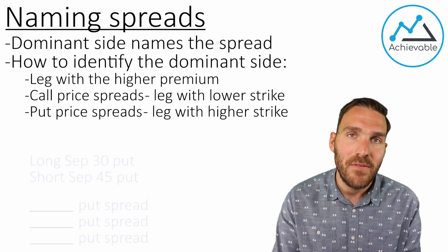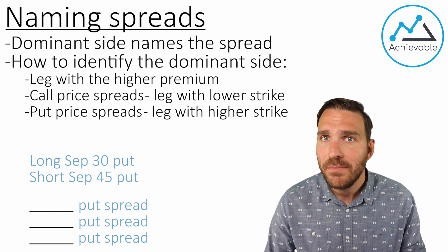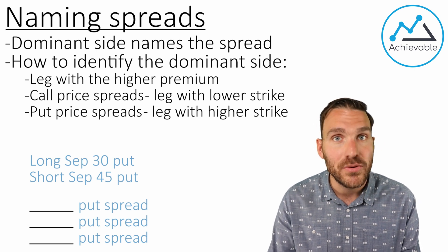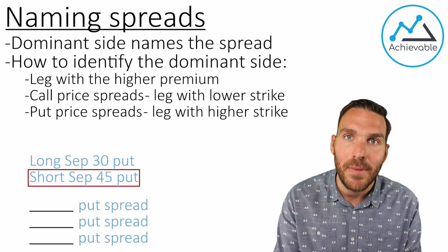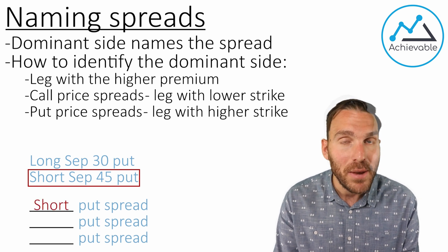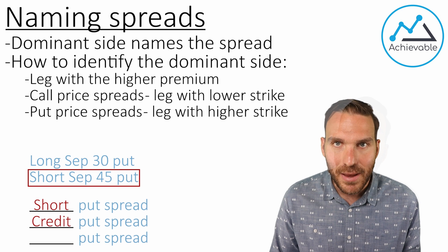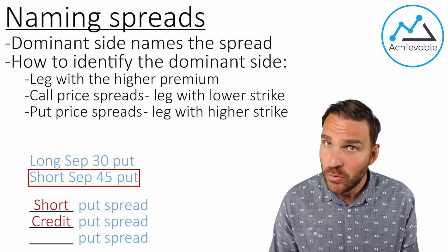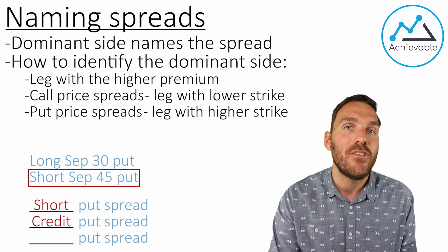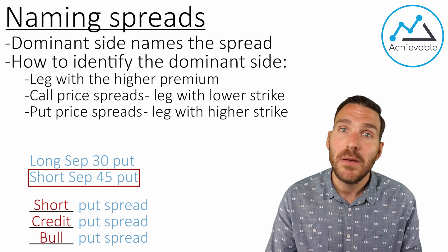Let's look at a quick example. Assume we have a long September 30 put and a short September 45 put. This is a price spread — same expirations, different strike prices. Based on the rule for put spreads, the side with the higher strike price will be the dominant side, which makes the short side our dominant side. This would be called a short put spread because the short side is dominant. It's also a credit put spread — credit means more money is coming into your pocket, since we're selling the more valuable option and buying the less valuable one. This is also known as a bull put spread, because short puts are bullish.